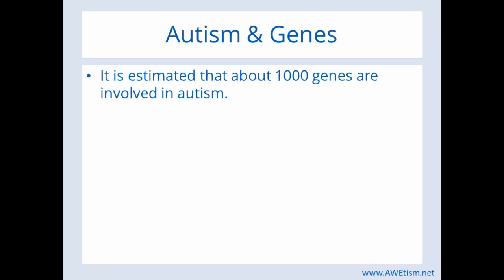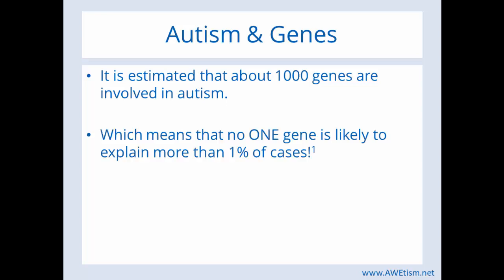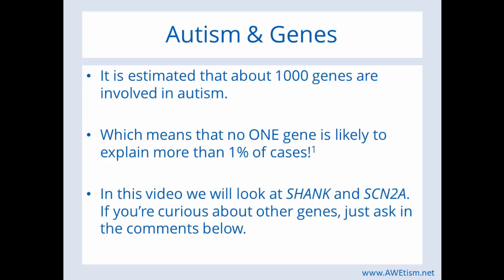Autism and genes. It is estimated that about 1,000 genes are involved in autism, which means that no one gene is likely to explain more than 1% of cases. In this video, we'll look at Schenck and SCN2A.